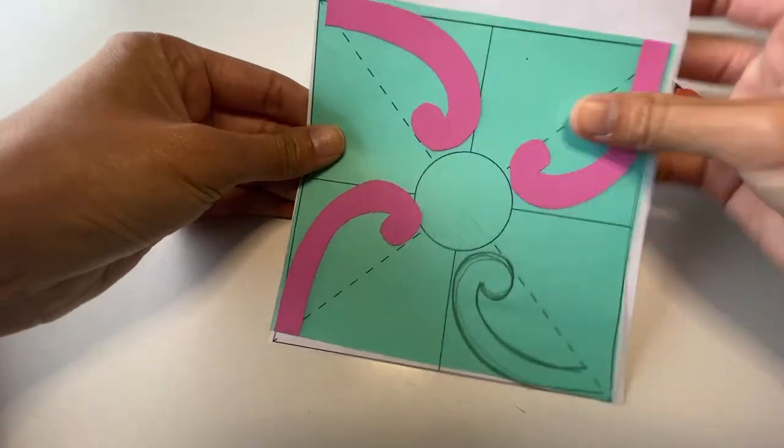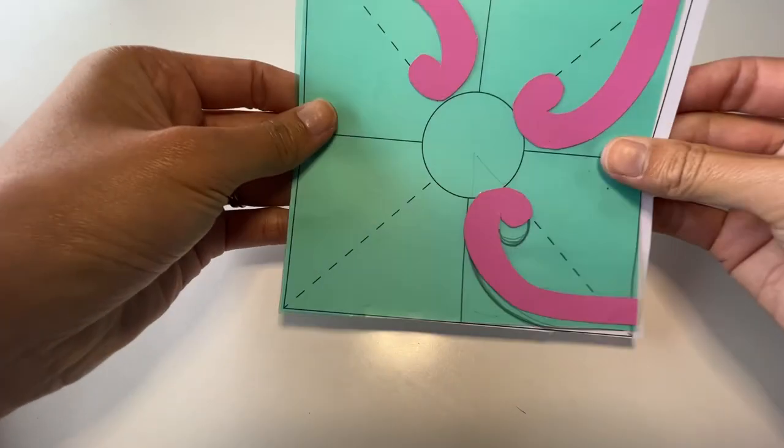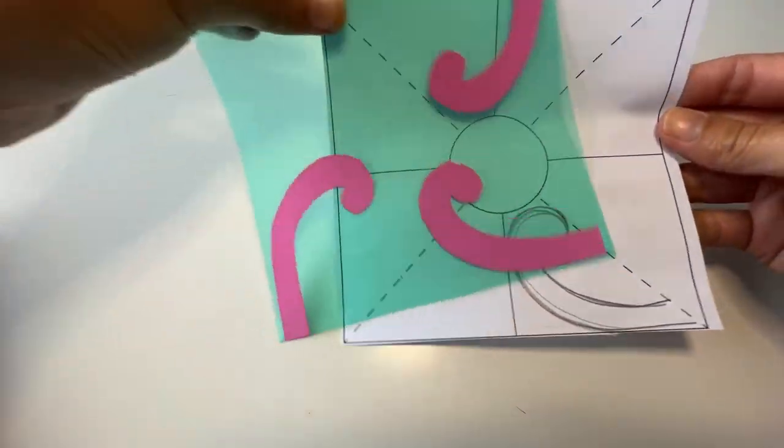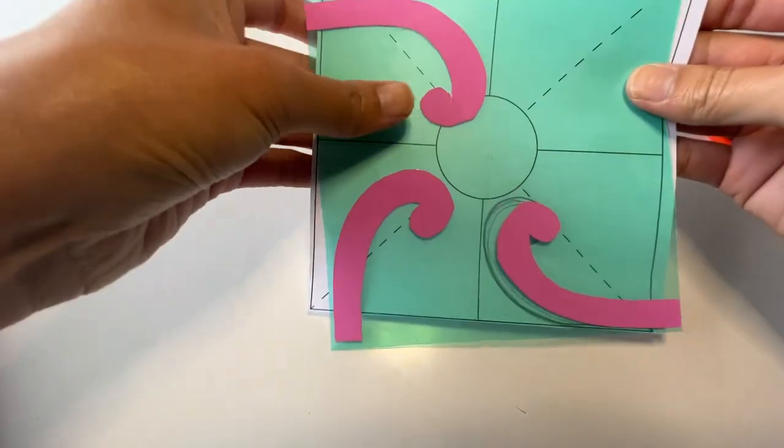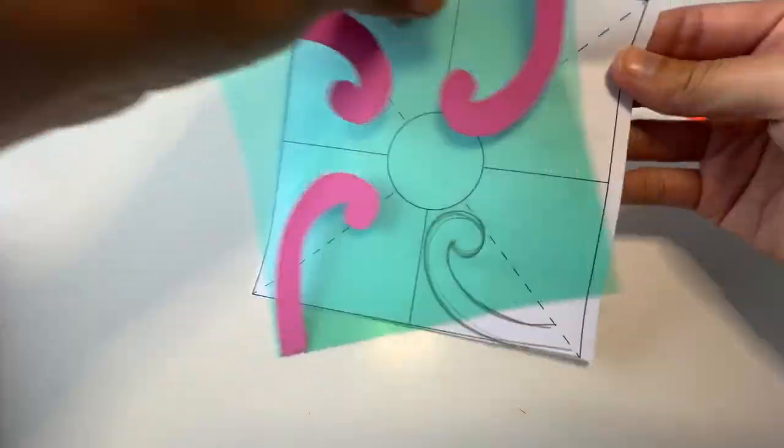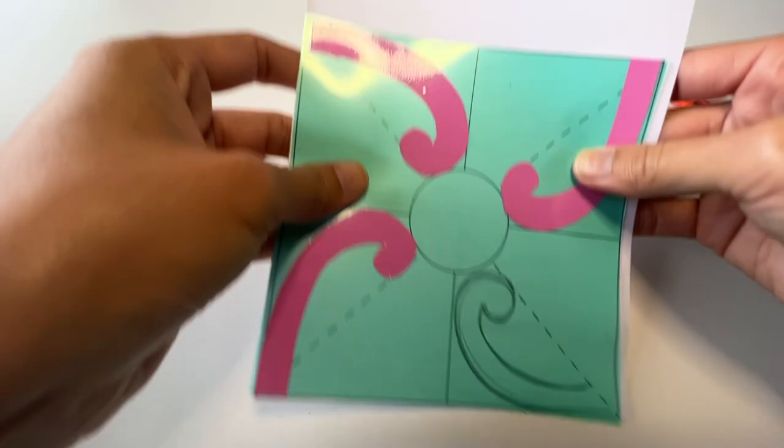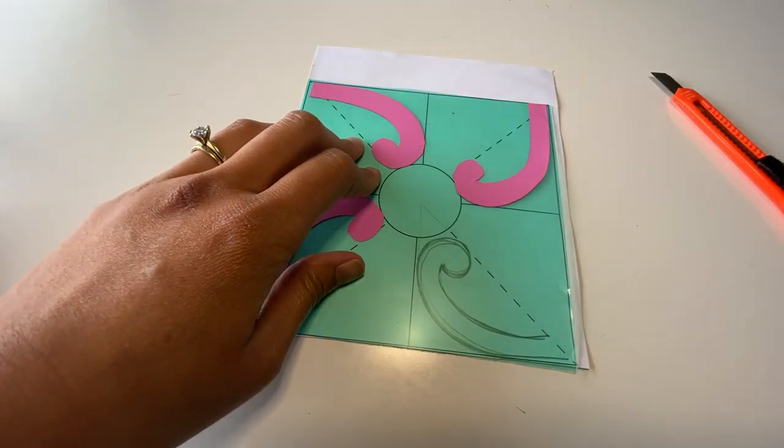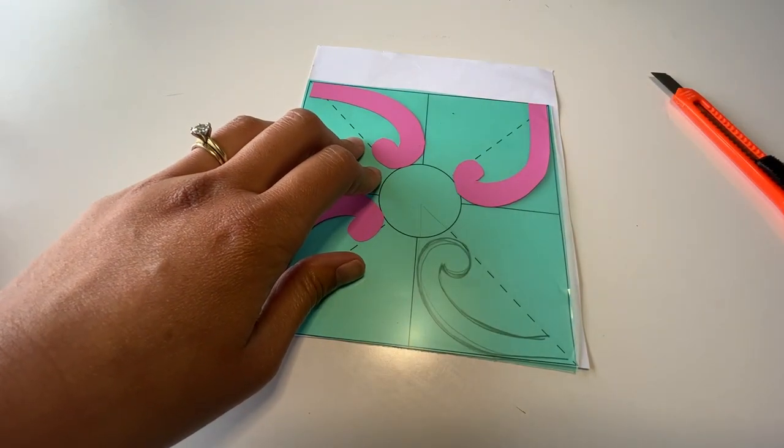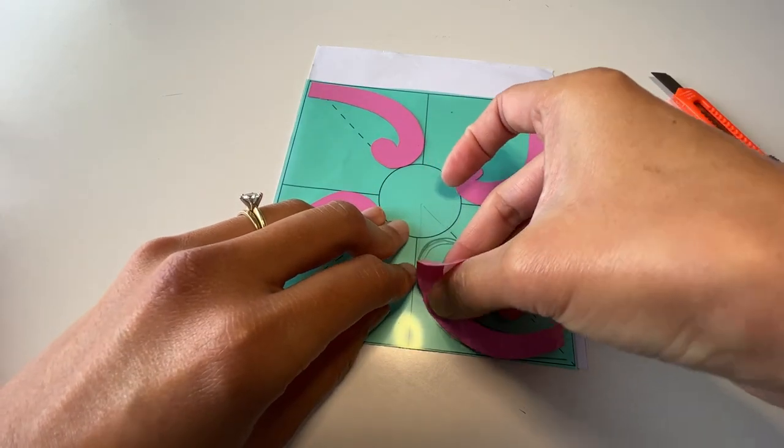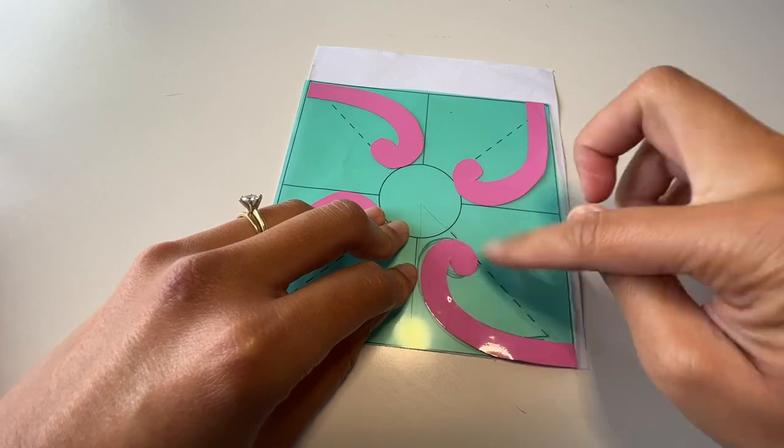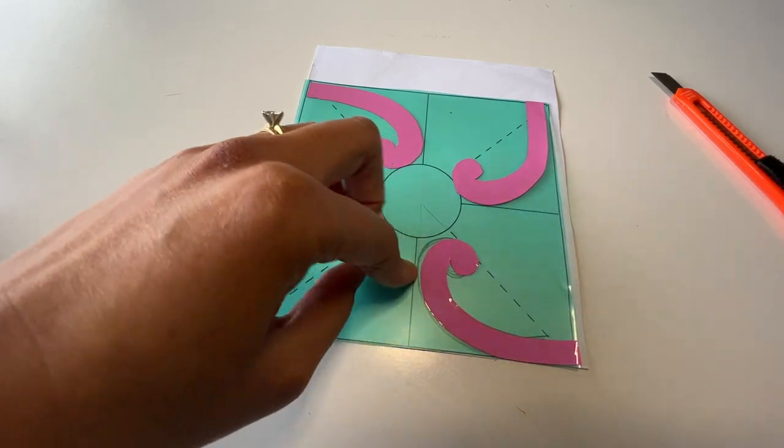So as you can see, I have just repeated the process. So I just keep turning it around on that same design. So then your design becomes pretty consistent. So this is the last one to go. There we go. Okay.